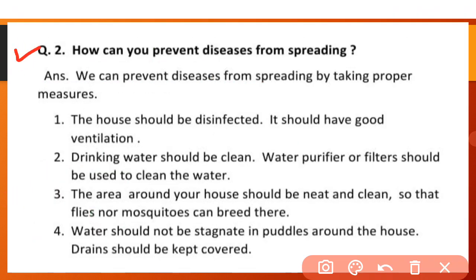How can you prevent diseases from spreading? First: the house should be disinfected and have good ventilation. Second: drinking water should be clean — water purifiers or filters should be used. Third: the area around your house should be neat and clean so flies and mosquitoes cannot breed. Fourth: water should not be stagnant in puddles and drains should be covered.